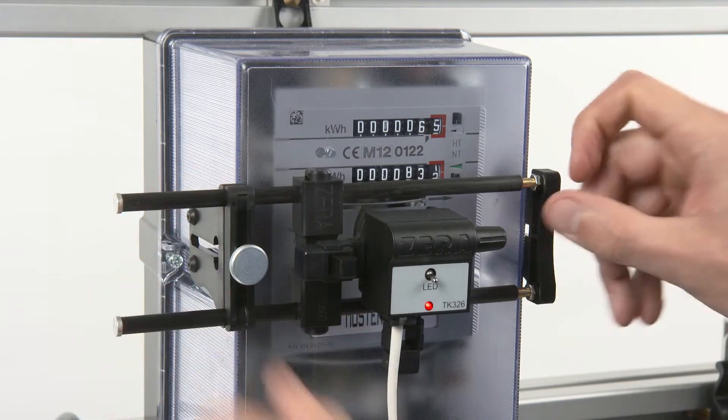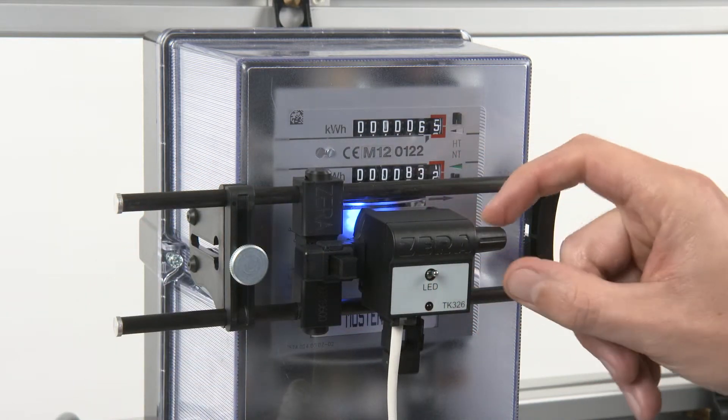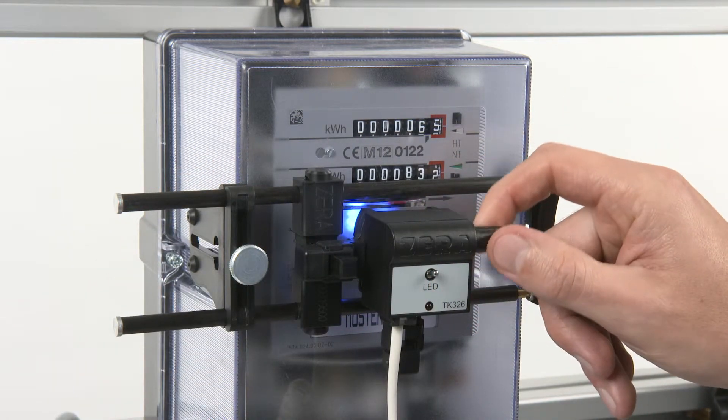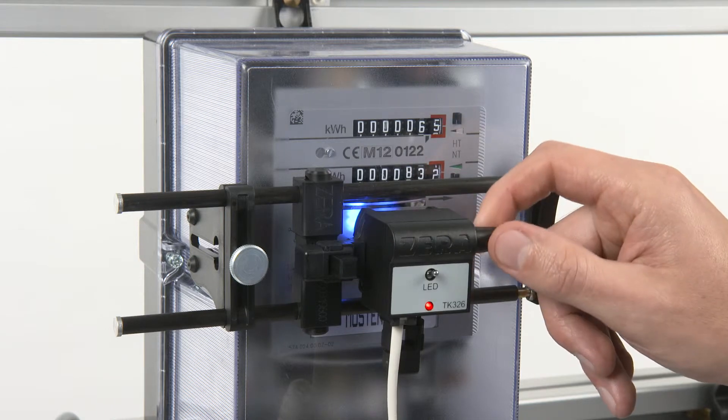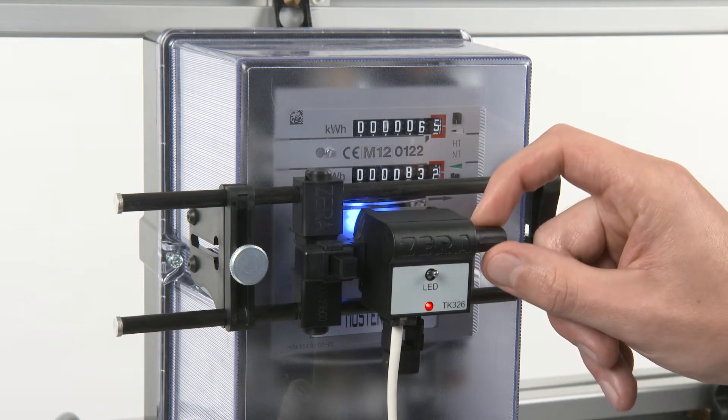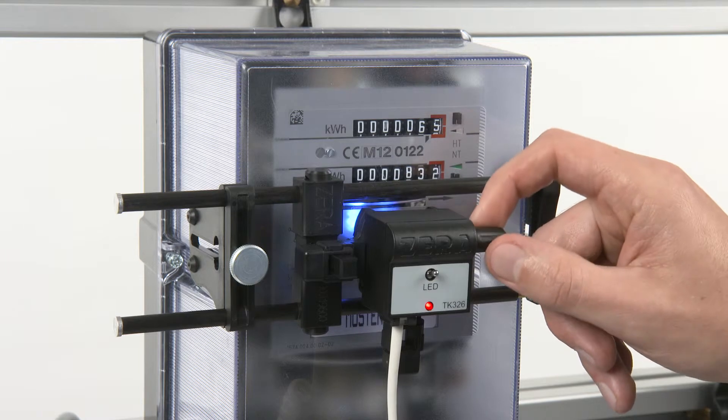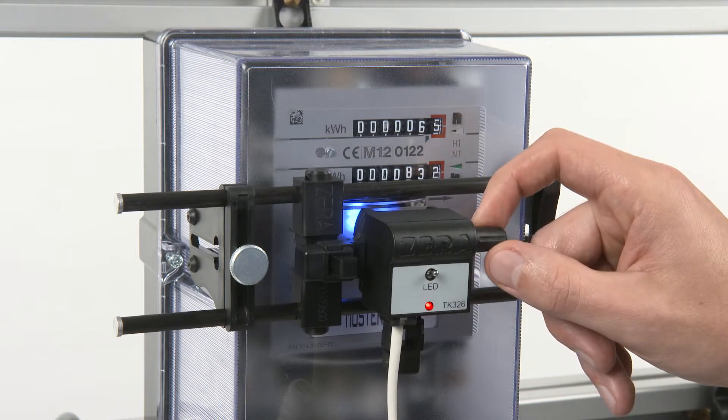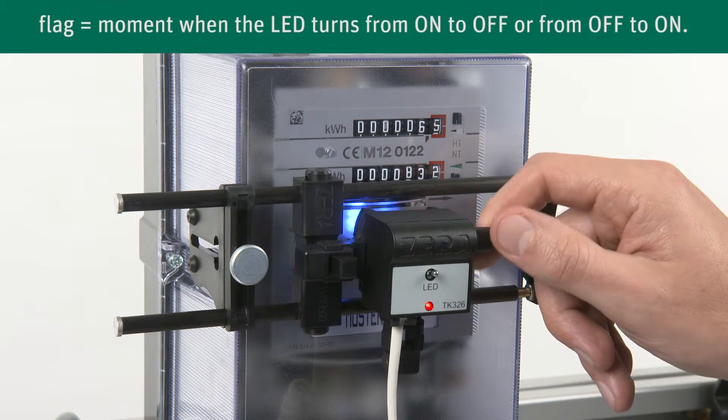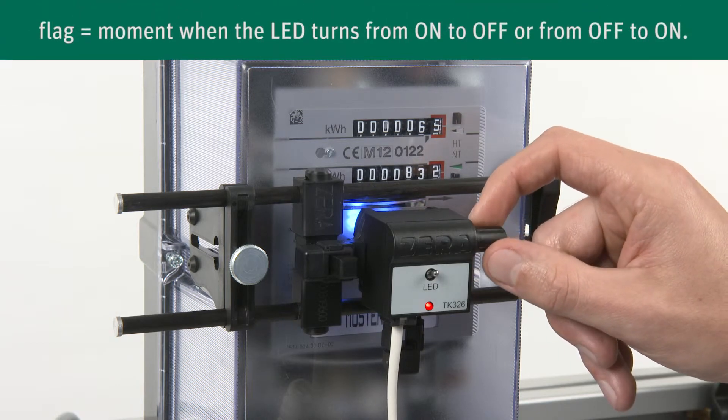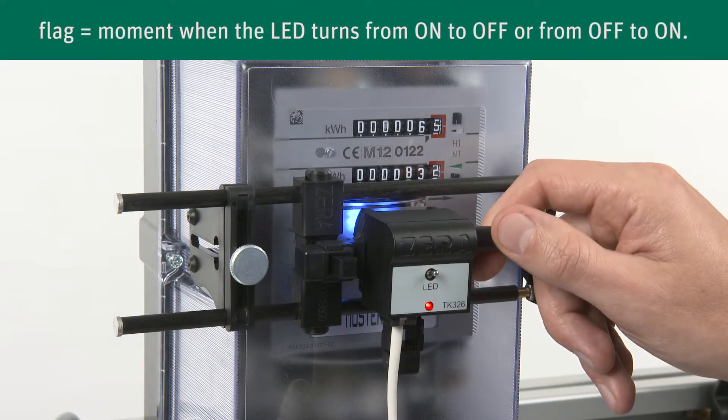Set the switch into the upper position. You can adjust the sensitivity of the scanning head by the potentiometer. As an indicator, use the red LED of the scanning head. First of all, try to find the flag of the scanning head LED. Then, adjust the potentiometer exactly while passing the rotor mark.